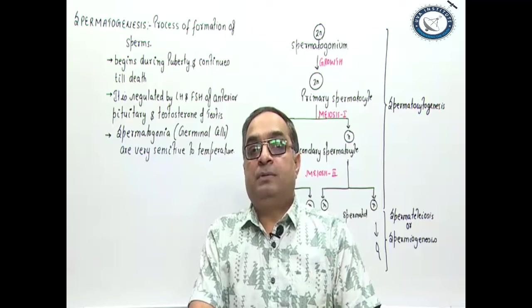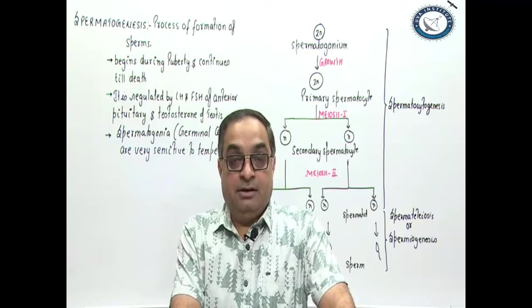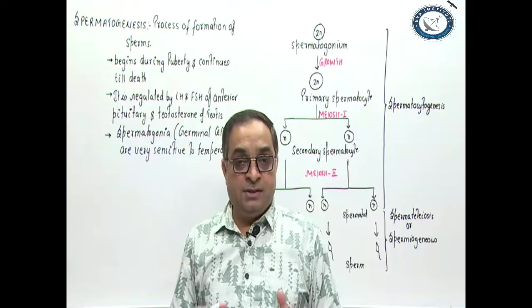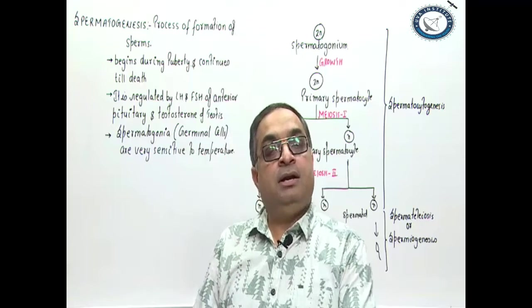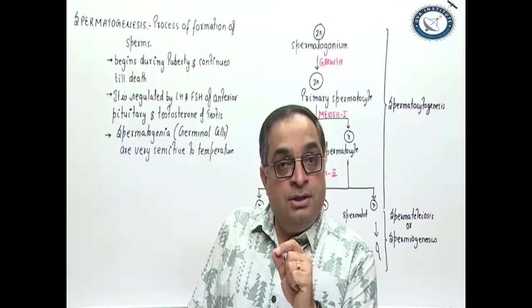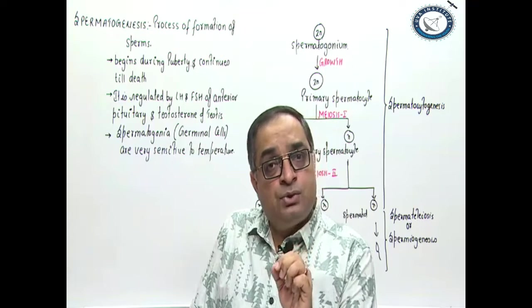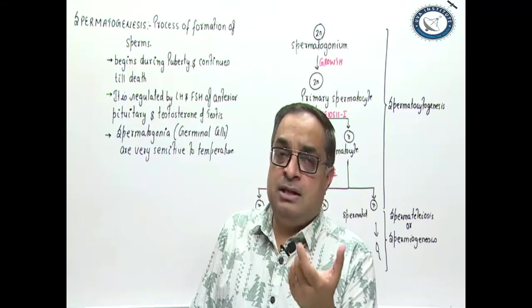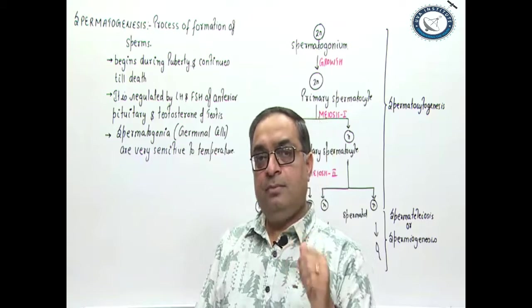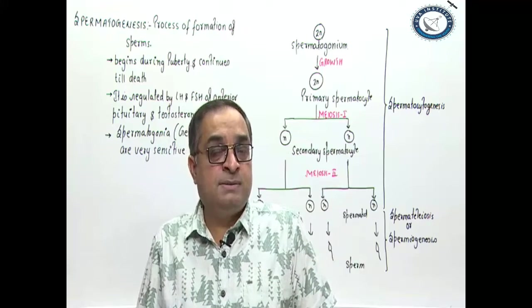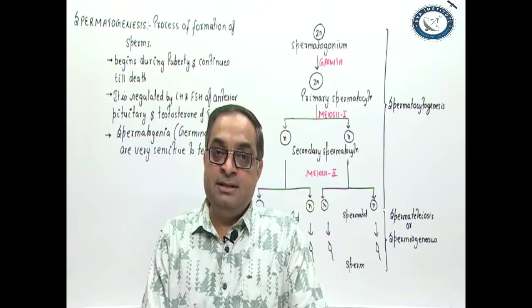You know that sperms are formed in testes and in humans the testes are extra abdominal, located outside the body in a pouch-like structure called scrotum. Why? Because the sperm production, maturation and storage requires few degrees lower temperature than the core body temperature. So, let us discuss about this process spermatogenesis, how the sperms are formed in the testes.